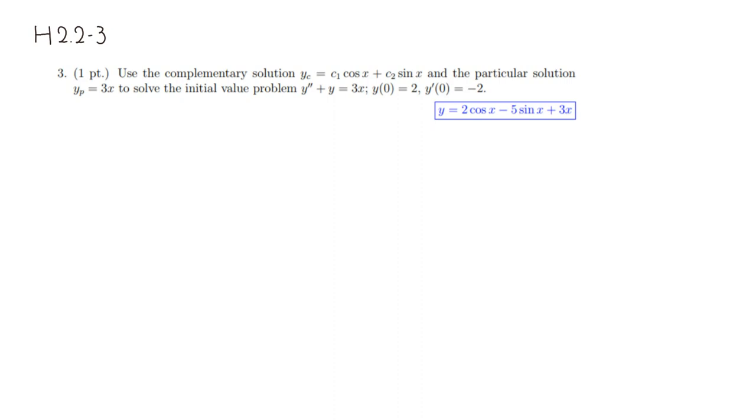What we do is we set the solution y to be the sum of the complementary solution, y sub c, and also the particular solution. The reason why we can do that is that this sum is always going to satisfy this differential equation. So it's going to be c1 cosine of x plus c2 sine of x, and y sub p particular solution is 3x.